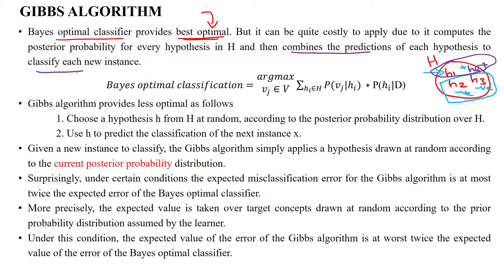We are combining all the hypotheses to classify the new test data. We select the maximal values among all hypothesis values by taking the sum of values given for each class. However, this is very costly because we are selecting all the hypotheses for each training data, taking much time to calculate the posterior probability.